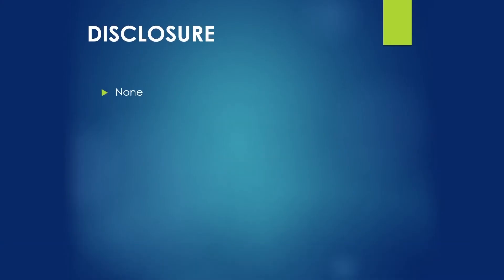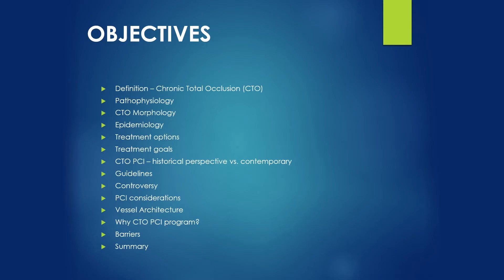I have no disclosure. Here are some of the objectives that we'll cover today, starting from the definition of chronic total occlusion, and we'll go through pathology, morphology, epidemiology, treatment options and goals, current guidelines, controversy, and some of the CTO PCI-specific topics.